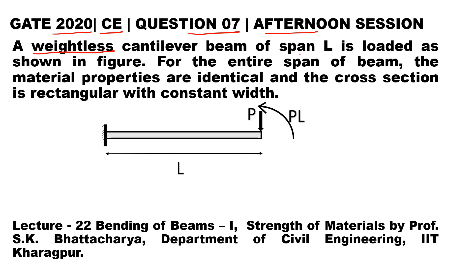A cantilever beam of span L is loaded as shown in the figure. For the entire span of the beam, the material properties are identical and the cross section is rectangular with constant width.